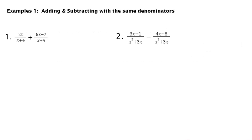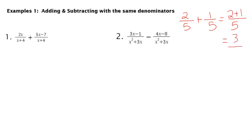The first two examples are when we have the same denominator. This is going to look very similar to when we have something like 2 fifths plus 1 fifth. They have the same denominator of 5, so it's the same as 2 plus 1, or 3 fifths. So we first are going to look at what's our least common denominator, and talk about how to calculate that when they're not the same.